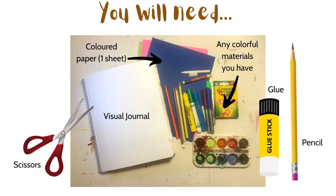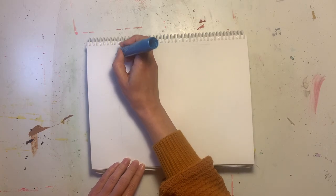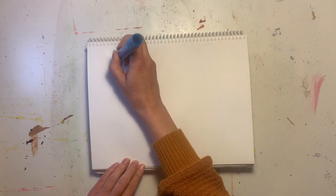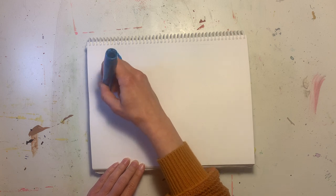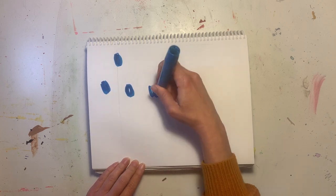These are the materials that I will be using. You will need some colorful materials, some colored paper, scissors, glue, a pencil, and your visual journal. Let's get started.